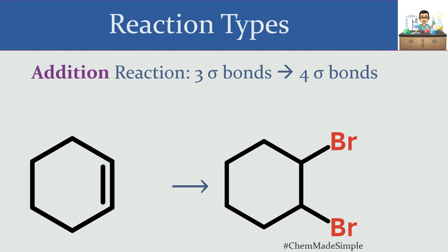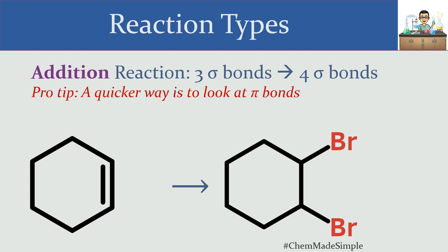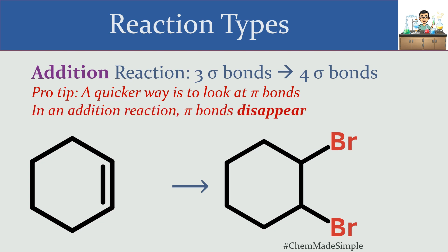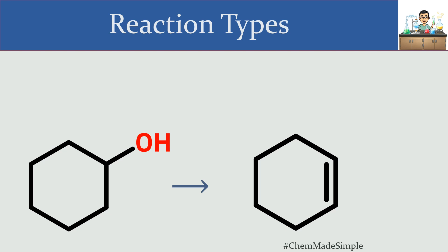Counting individual Sigma bonds can be daunting, so here's a pro tip: keep track of pi bonds instead. If I'm just looking at pi bonds, I can spot that I have one pi bond in the reactant molecule and zero in the product. In an addition reaction, the number of Sigma bonds goes up, which means pi bonds disappear. So the quickest way to spot an addition reaction is to note that pi bonds were present and now they're gone.